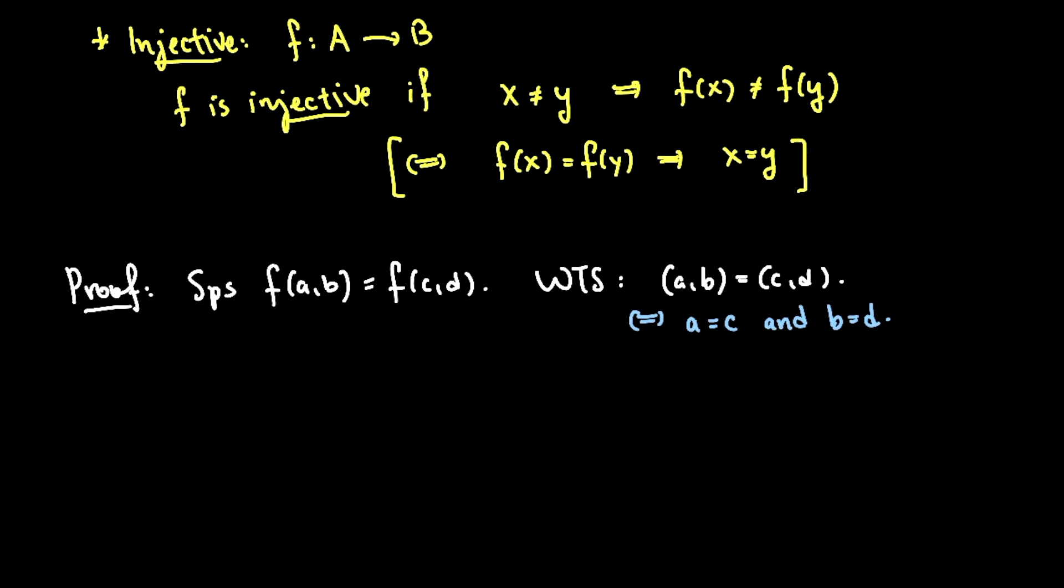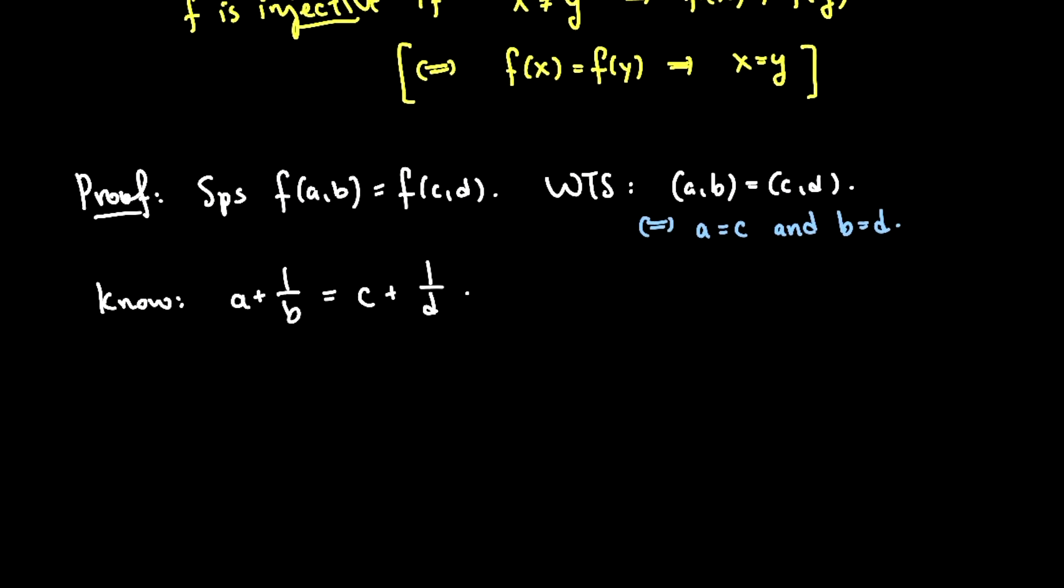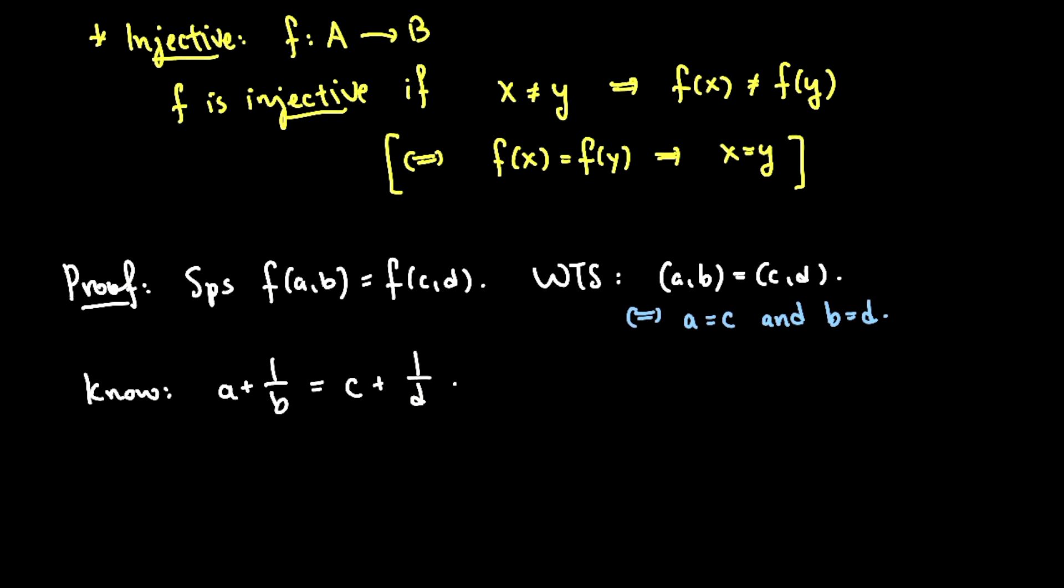All I can do is work with this definition here. f of a b equals f of c d. So from that, I can conclude that a plus 1 over b, that's f of a b equals c plus 1 over d. My instinct at this point is to clear denominators. So I'll multiply both sides by bd and I'll get a bd plus d equals c bd plus b.